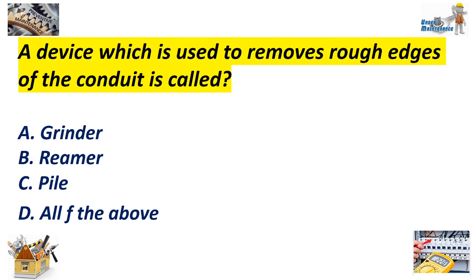A device which is used to remove sharp edges of conduit is called: A. Grinder, B. Reamer, C. File. Answer: Reamer, B.